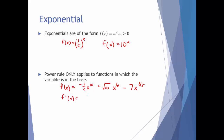f prime of x equals 10 times negative one-half, giving me negative 5x to the ninth, plus 6 root 10 x to the fifth. Two-fifths times 7 gives me 14 fifths, so minus 14 fifths x to the negative three-fifths. We can use the power rule on each one of those terms.